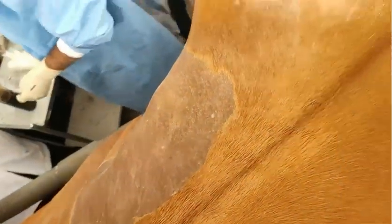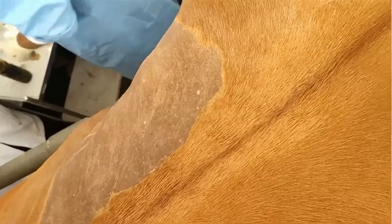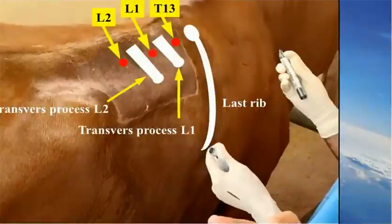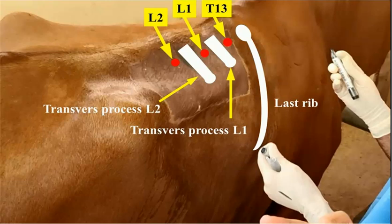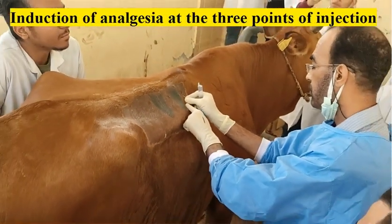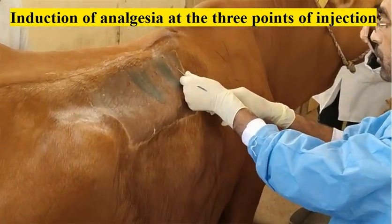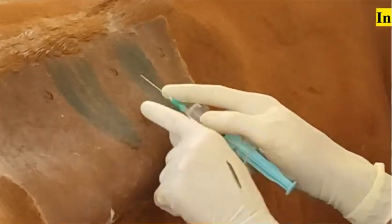Here the veterinarian aseptically prepares the sites of injection. Like you see, these are the anatomical structures and the nerves previously mentioned. In this shot, the veterinarian makes subcutaneous infiltration analgesia at the three injection sites, to control animal movement during blocking the nerves later on.